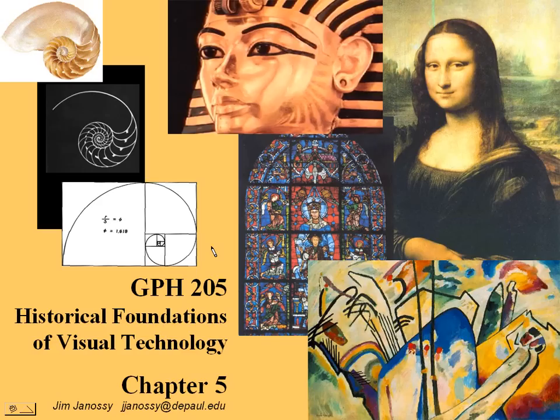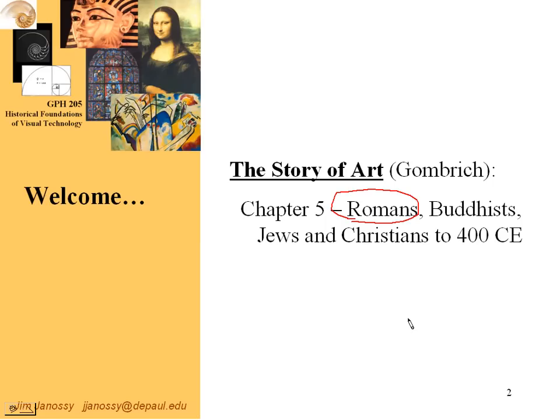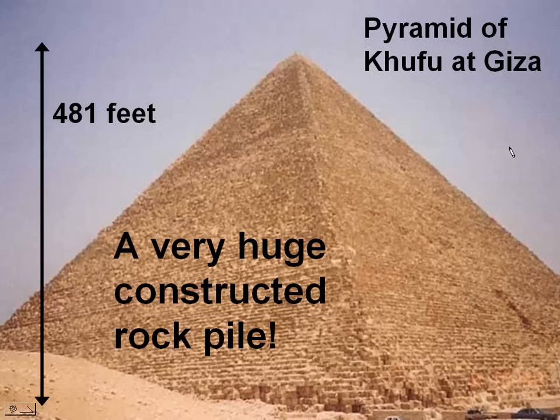Hi, this is Jim Janice and this is the lecture slides for chapter 5 of the Gombrich textbook The Story of Art. In this chapter, we're going to cover a variety of things: the Romans, as they took over from the Greeks as the primary civilization in the Mediterranean area, a little bit about Buddhism and Buddhist art in India, and then Jews and Christians and the contributions each of these religions made to art during and subsequent to the Roman Empire.